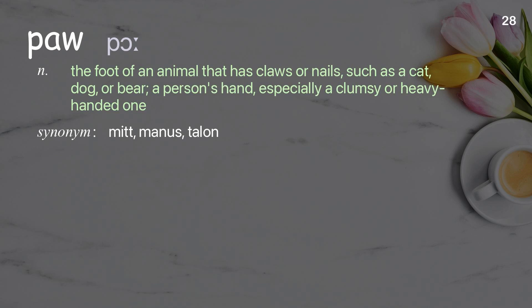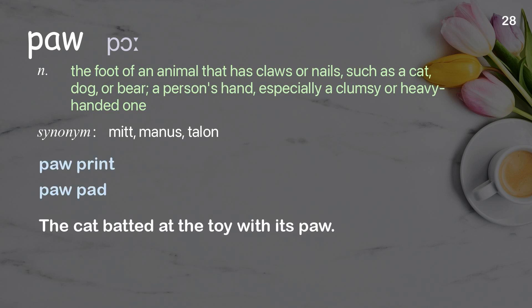Paw: the foot of an animal that has claws or nails such as a cat, dog, or bear; a person's hand, especially a clumsy or heavy-handed one. Examples: paw print; paw pad. The cat batted at the toy with its paw.